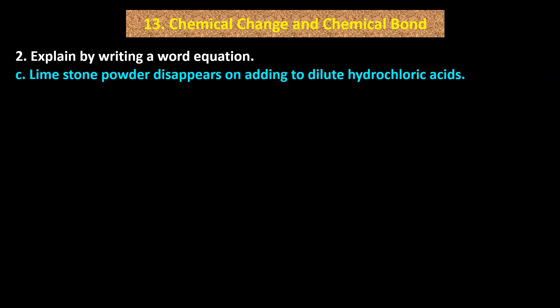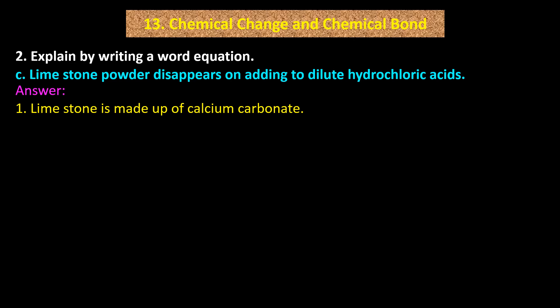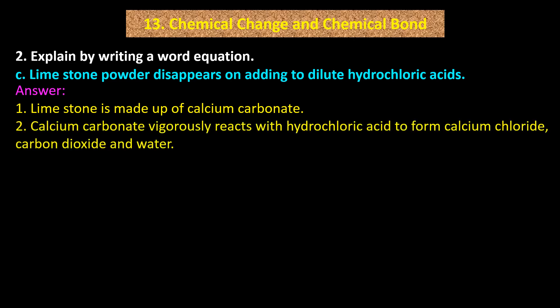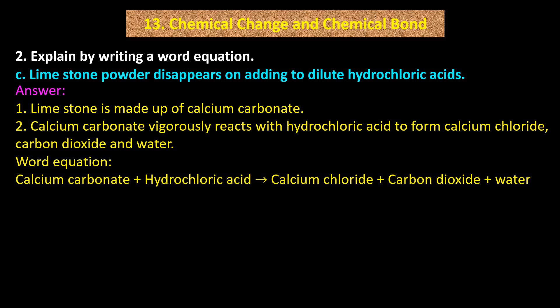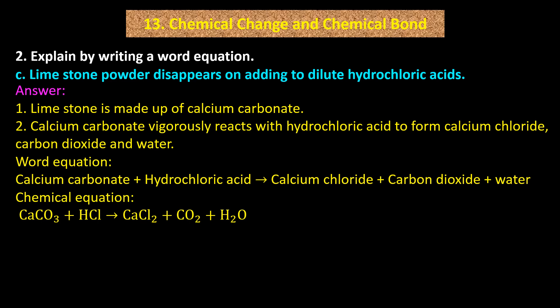C: Limestone powder disappears on adding to dilute hydrochloric acid. Limestone is made up of calcium carbonate. Calcium carbonate vigorously reacts with hydrochloric acid to form calcium chloride, carbon dioxide, and water. Word equation: calcium carbonate + hydrochloric acid → calcium chloride + carbon dioxide + water.